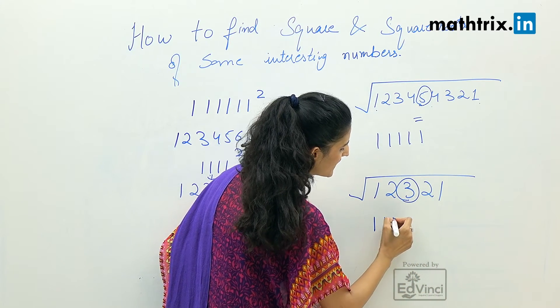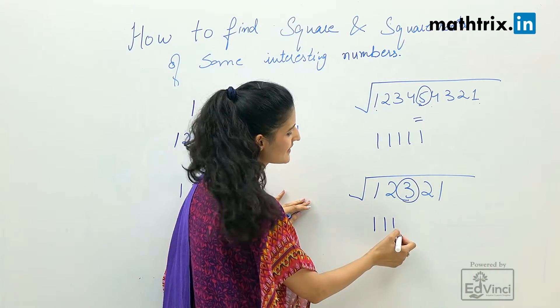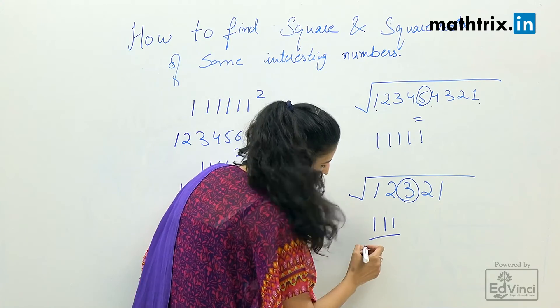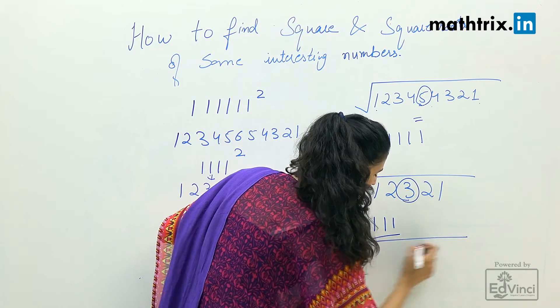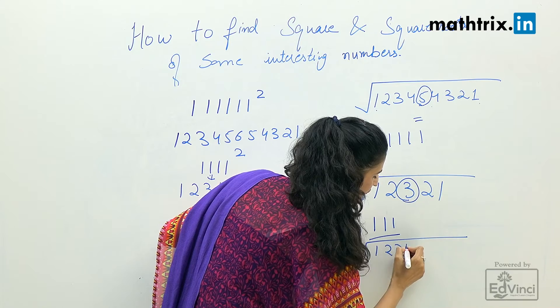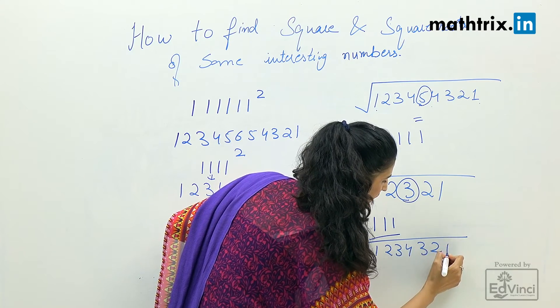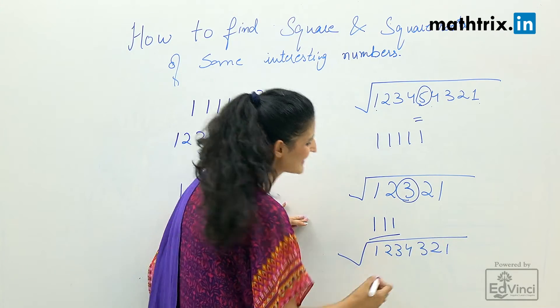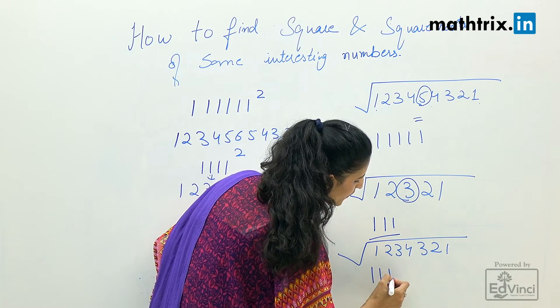So we have to write one three times. The answer is 111. With this, you can have another example like we are going one, two, three, four, three, two, one. You know the answer.